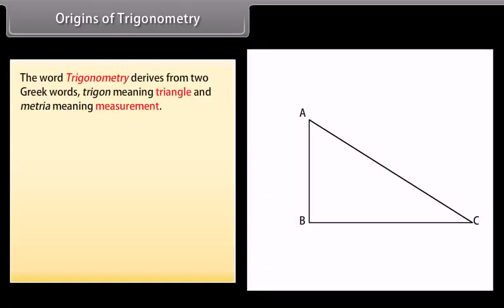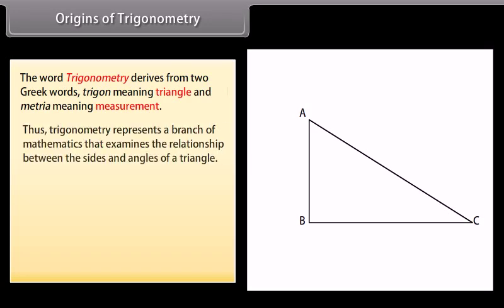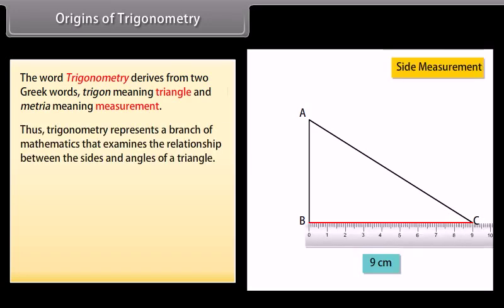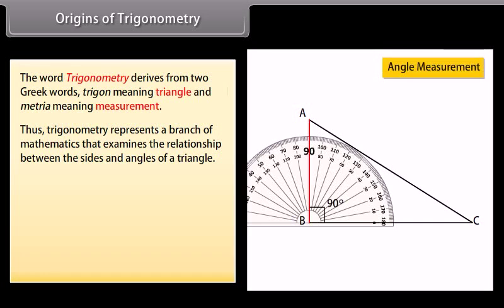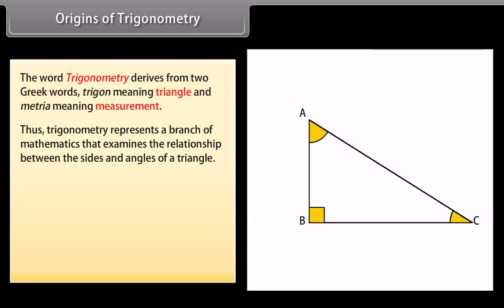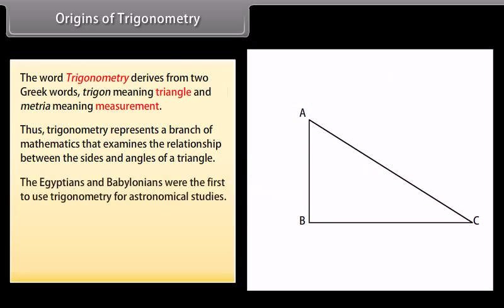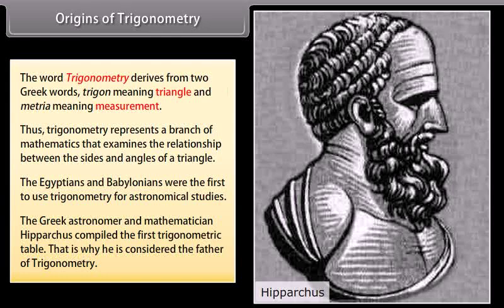The word trigonometry derives from two Greek words: Trigon, meaning triangle, and Metria, meaning measurement. Thus, trigonometry represents a branch of mathematics that examines the relationship between the sides and angles of a triangle. The Egyptians and Babylonians were the first to use trigonometry for astronomical studies. The Greek astronomer and mathematician Hipparchus compiled the first trigonometric table, which is why he is considered the father of trigonometry.